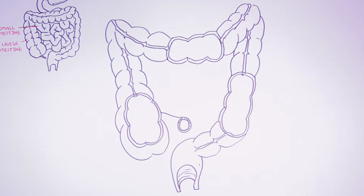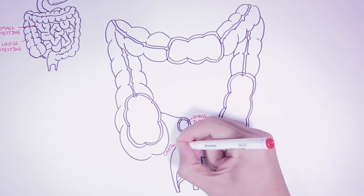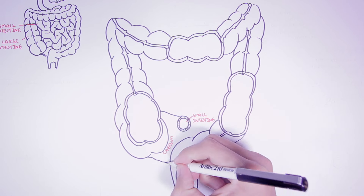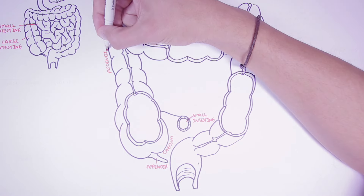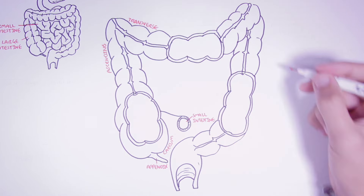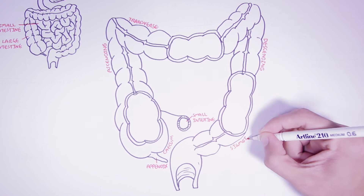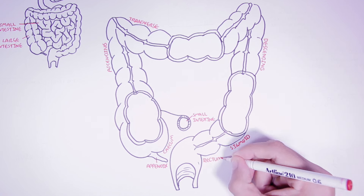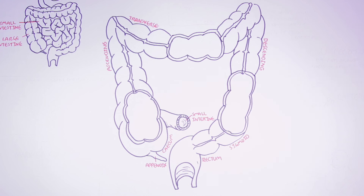Let us recap the regions of the large intestine. Here is the small intestine that joins with the large intestine. The large intestine is made up of the cecum, the ascending colon, the transverse colon, the descending colon, the sigmoid colon, and rectum. We also have the appendix that joins with the cecum.